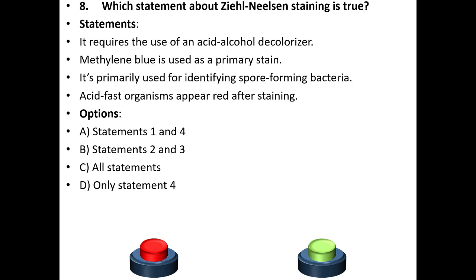Eighth question. Which statement about Ziehl-Neelsen staining is true? Statements: It requires the use of an acid-alcohol decolorizer. Methylene blue is used as the primary stain. It is primarily used for identifying spore-forming bacteria. Acid-fast organisms appear red after staining.